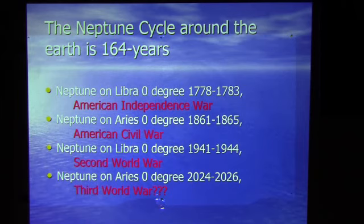Here we have this slide showing that when Neptune conjuncts on the Libra autumn equinox 1778-1783, American Independence War. Neptune on the spring equinox 1861-1865 is the American Civil War. Neptune on Libra zero degree, the autumn equinox 1941 to 1944, we have Second World War. And the coming 2024 to 2026, Neptune again on the spring equinox conjuncts the sun. Will there be a Third World War?